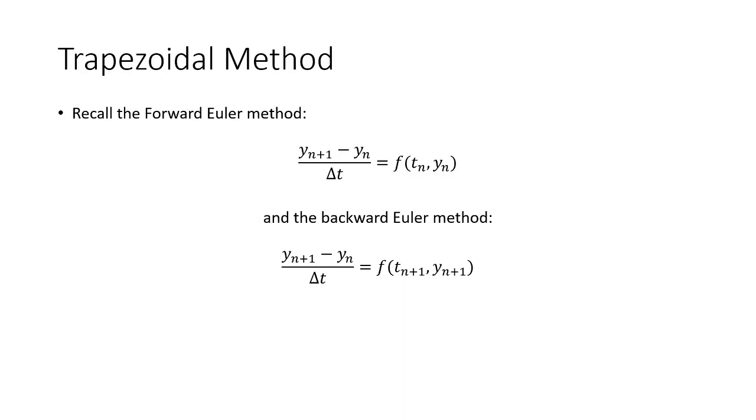And then the backward Euler method, we made the derivative term equals y sub n minus y sub n minus 1. And when we changed our indexing scheme, our function ended up being evaluated at t of n plus 1 and y of n plus 1. So we ended up with this implicit scheme.